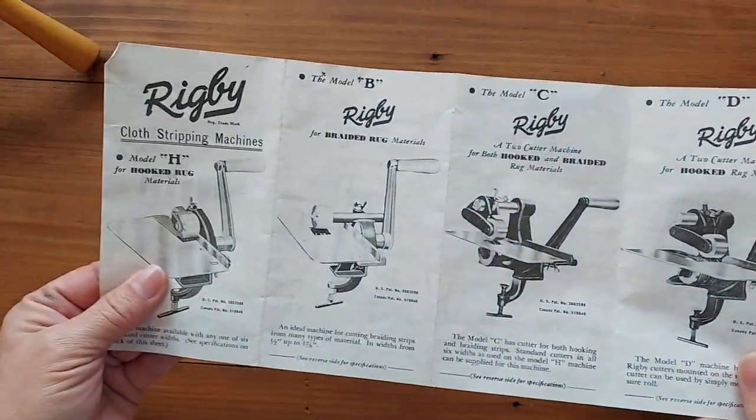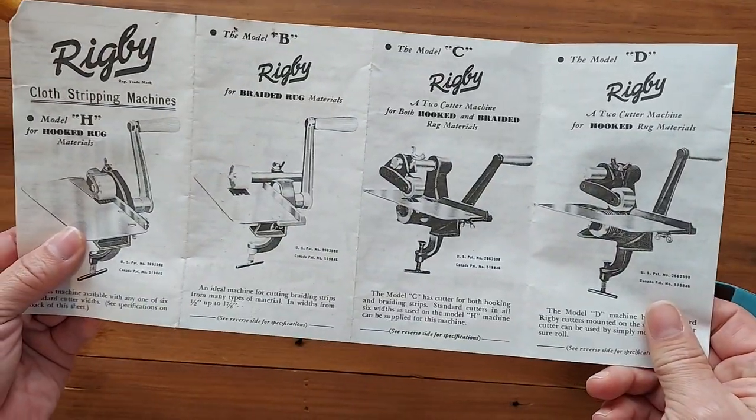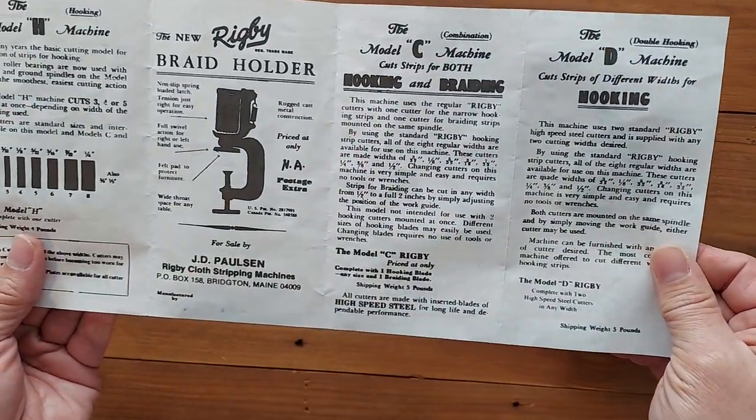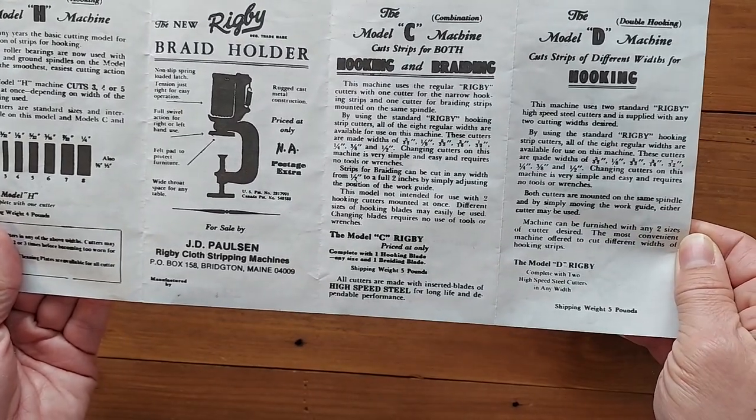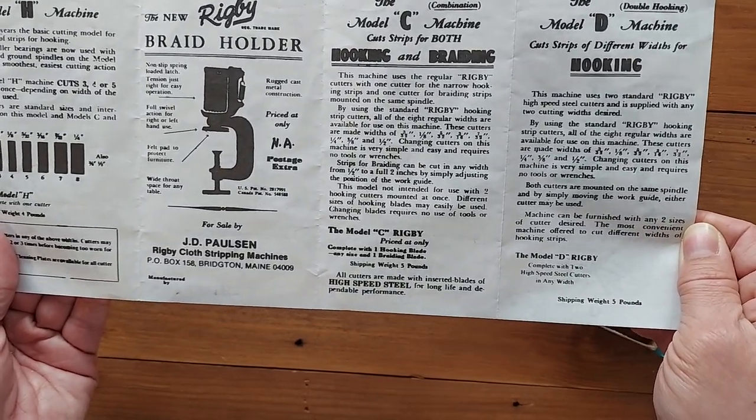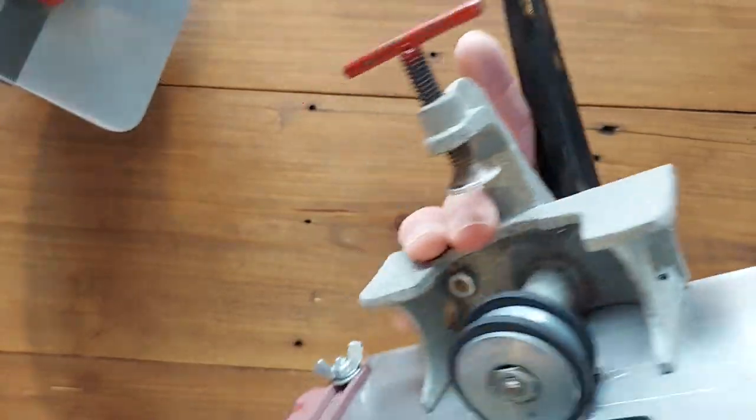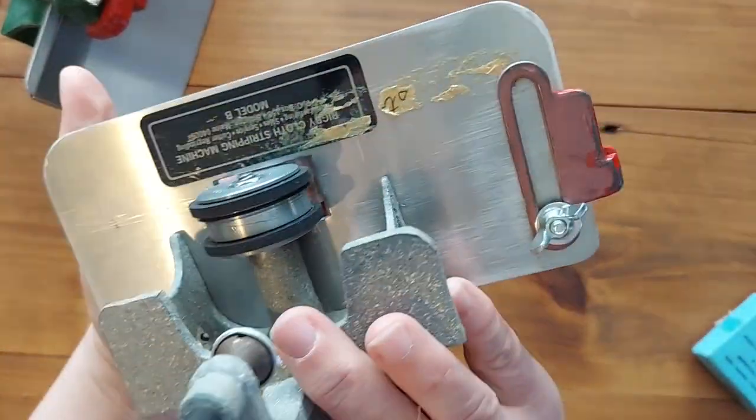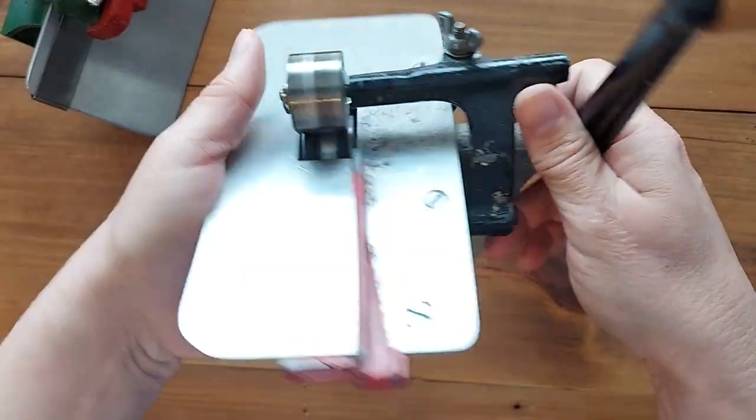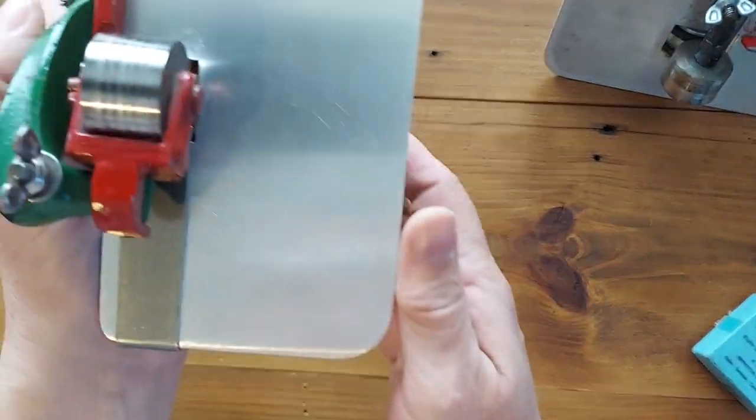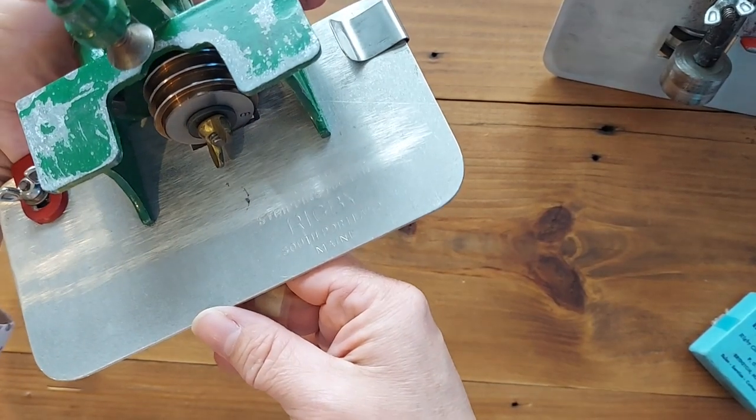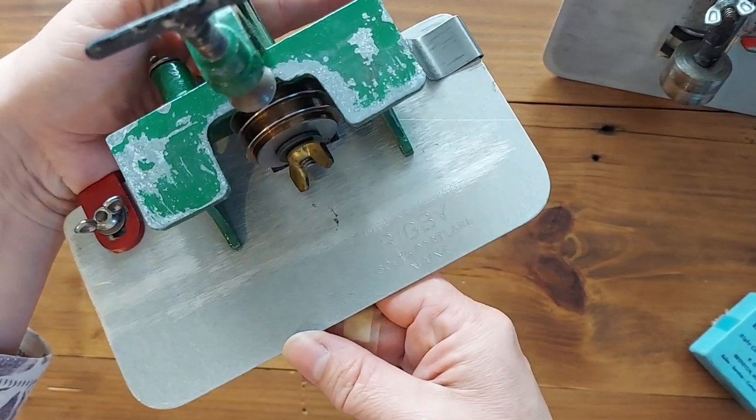We do have a little instruction manual here but it's very limited on information. It doesn't really explain how to change the blades. It just is more of a sales brochure. This one here is a Model B. This one is we think an older version, not really sure what its model number is.